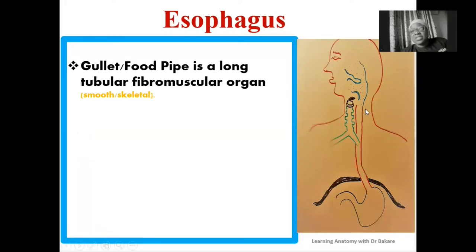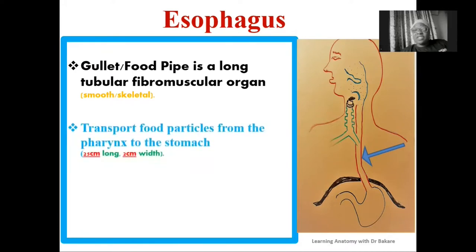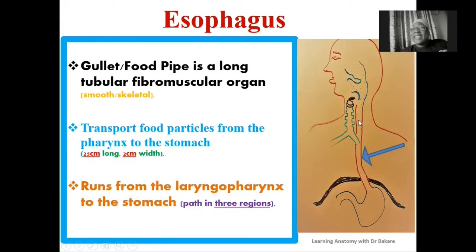It is made up of fibrous tissue and muscular tissue. The muscular component of the oesophagus can either be of skeletal muscle type or a smooth muscle type. The oesophagus is highlighted in red, running from the pharynx down to the stomach. The sole function of the oesophagus is to transport food particles from the pharynx down to the stomach in the abdominal cavity. The oesophagus is about 25 cm in length and about 2 cm in width.